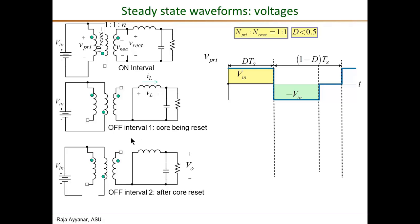This continues until the core is reset — that is, when the flux falls to zero or the current through the reset diode reaches zero and the diode turns off. We then enter off interval two, where the primary switch S1, the reset diode, and secondary diode D1 are all off. Each winding is floating, so we write V_primary as exactly zero during off interval two. In practice, parasitic L and C cause ringing that eventually dies to zero, but with ideal components V_primary is exactly zero.